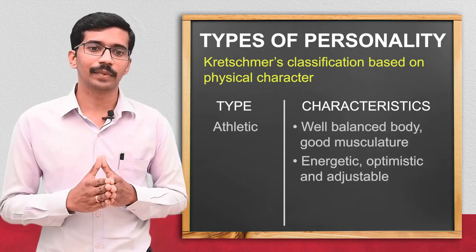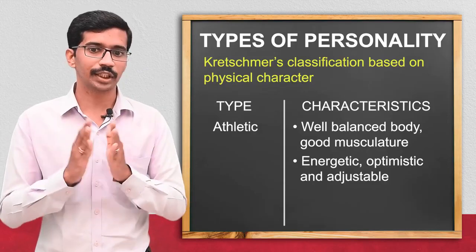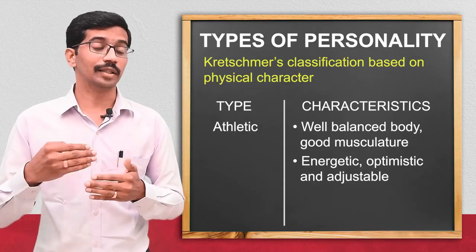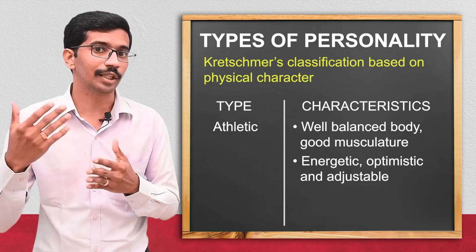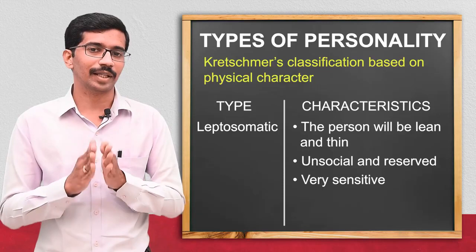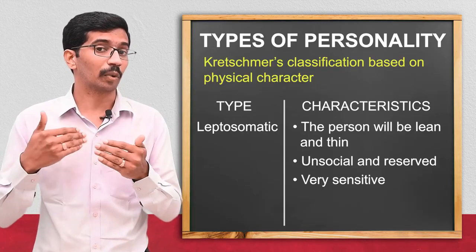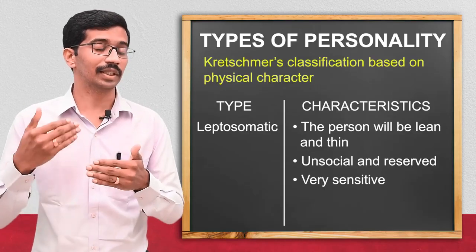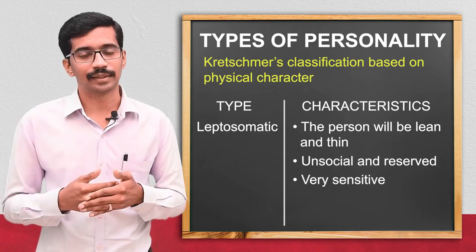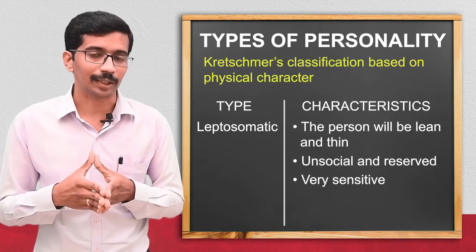Coming to the second type, the athletic type: the person will be having a balanced, well-muscular body. They will be always energetic, having optimism, and very adjustable with any person. Coming to the third type, the leptosomatic type: they will be very thin and do not maintain proper social relationships. They may be unsocial with a reserved character and very sensitive — even a simple matter may immediately make them irritable.